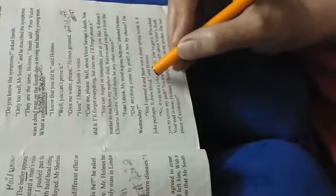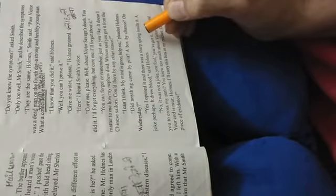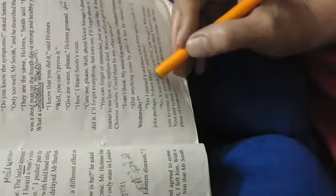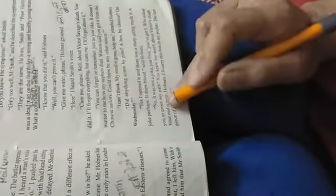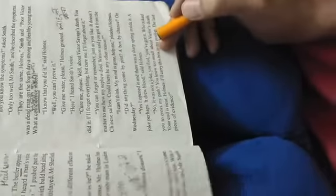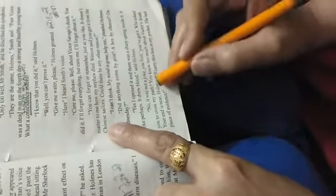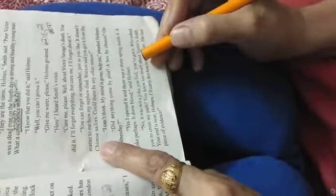Yes, I opened it. And there was a sharp spring inside it. Haan, meinne usko kholla tha. Or us meek bhooti tikhha sa spring tha. A joke perhaps, it drew blood, said Holmes. Holmes ne kaha ho sakti hai koji mzaak ho. Par meri haat se koon nikla tha. No, it was not a joke you fool. You have got it. Nahi, yae koji mzaak nahi tha muraq. Tumhain ho gaya hai.